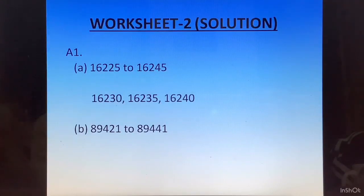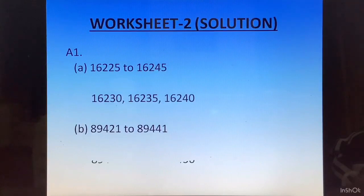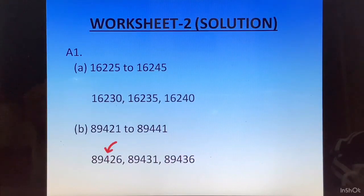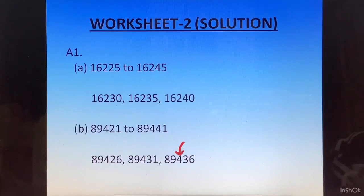Part B: counting by 5s from 89421 to 89441. We add 5 to 89421 to get 89426, then add 5 to get 89431, and add 5 again to get 89436. We stop here because if we add 5 once more, we will get the last number in the question which is 89441.